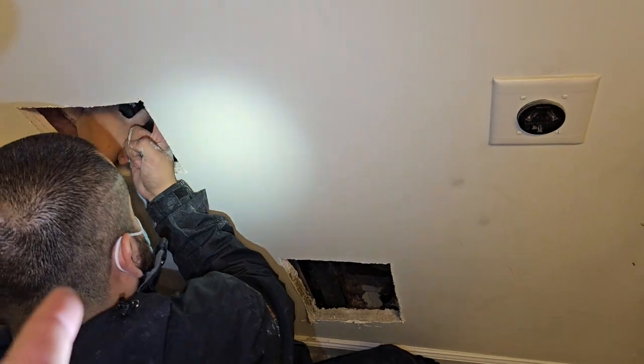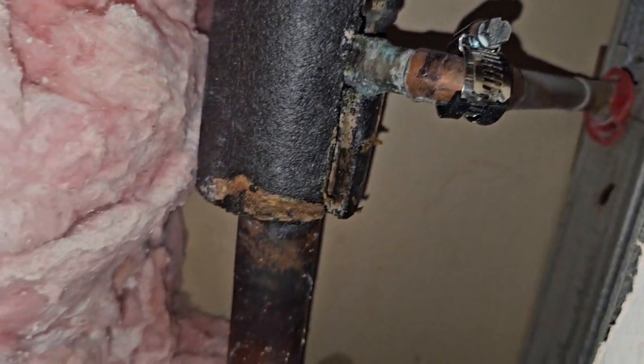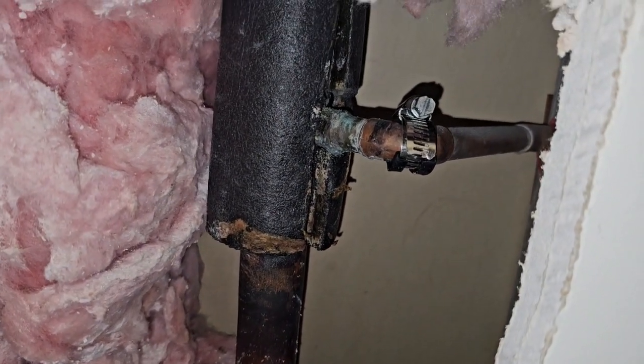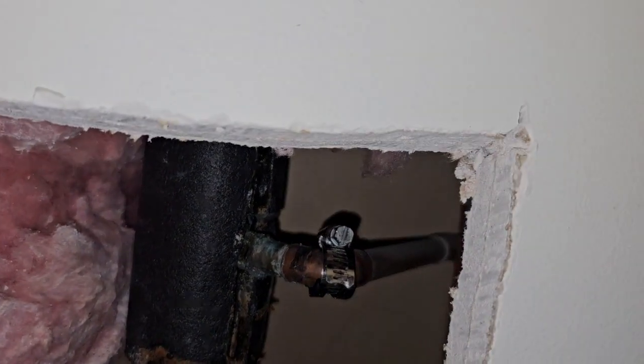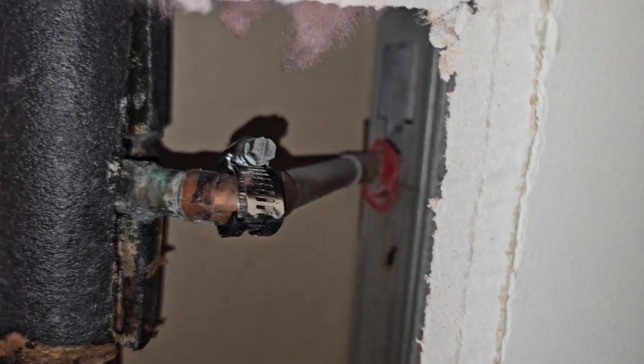So you can see how we use that thermal camera and some other tools in order to kind of locate these leaks behind the wall. So here we got a temporary clamp on the pipe. We're going to end up having to shut the water off for this tier and replace this T and the 45 that goes back in the wall, that half-inch line there. But that will be another day.